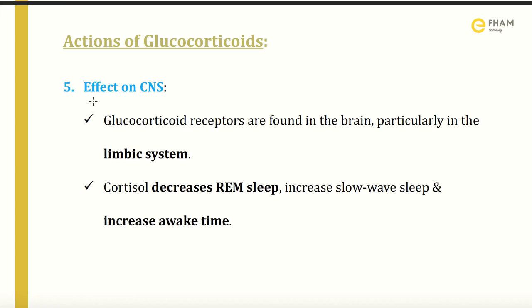The fifth action is the effect on the CNS. Glucocorticoid receptors are found in the brain, particularly in the limbic system, which is responsible for behavior and emotion. Cortisol decreases REM sleep and increases slow-wave sleep, resulting in increased awake time. During REM sleep, a strong stimulus may not wake up the person, but during slow-wave sleep, any significant stimulus will wake us up.